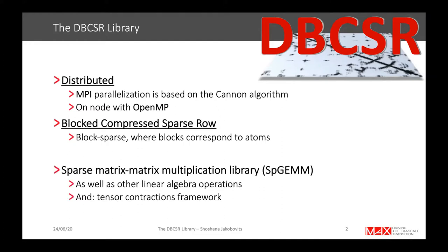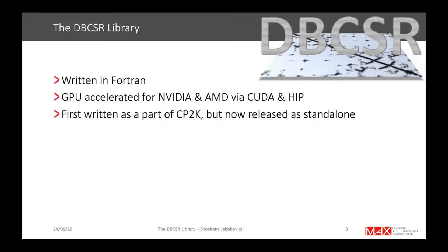DBCSR performs sparse matrix-matrix multiplication (SpGEMM) as well as other linear algebra operations. More recently it has been augmented with a tensor contractions framework. It is written in Fortran, GPU-accelerated for both NVIDIA and AMD GPUs via CUDA and HIP. DBCSR was originally written as part of CP2K but has been extracted and released as a standalone library, which you can find and use on its own or integrate into other codes.